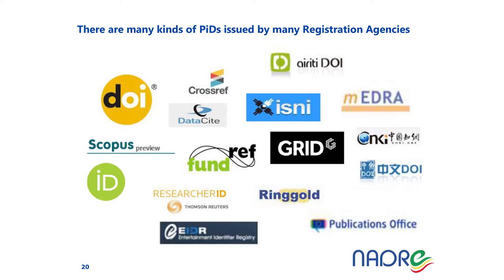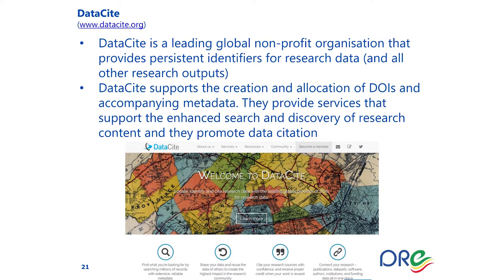There are many kinds of PIDs and they are usually issued by so-called registration agencies — you can see a number of those in the slide. One that is becoming very interesting when it comes to citing not only publications but also datasets connected to publications and software connected to datasets is DataCite. DataCite is a leading global not-for-profit organization that provides persistent identifiers for research data and all other research outputs. DataCite supports the creation and allocation of DOIs and accompanying metadata, and provides services that support enhanced search and discovery of research content and promote data citation.